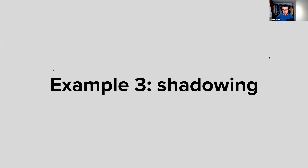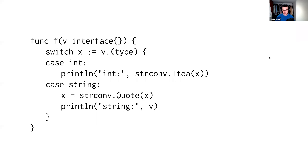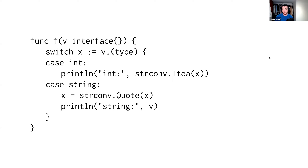Now we enter into shadowing. I believe this is an idea I copied from Roger years ago, but it's saved me a number of times. The idea is — take a look at this code and see if you can spot a mistake. We do a type switch on an interface v, assign the specific type to the name x, and then use that.